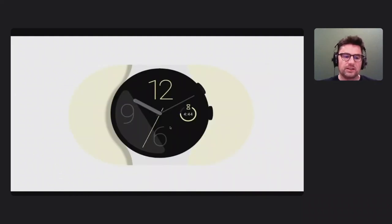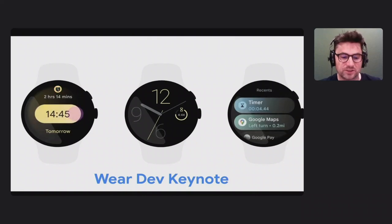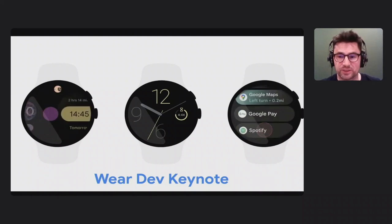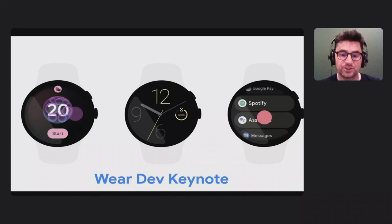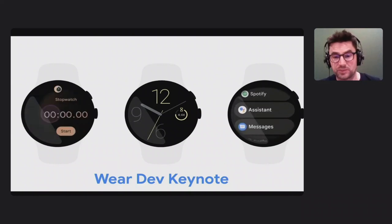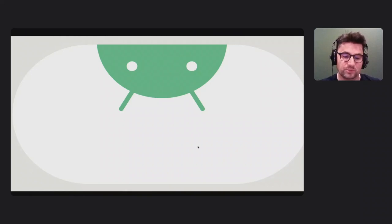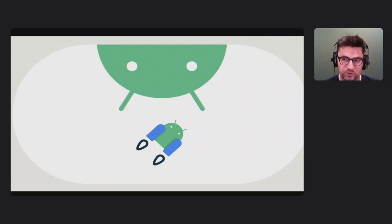Wear OS is based on Android and it's optimized for the wrist. We've made some major changes and improvements to the platform, including Samsung bringing their expertise to Wear OS — I encourage you to watch the Wear developer keynote for details. All the libraries announced are part of Jetpack, which, just like mobile, lets you follow best practices, reduce boilerplate, and have your code work consistently across Wear OS versions and devices.